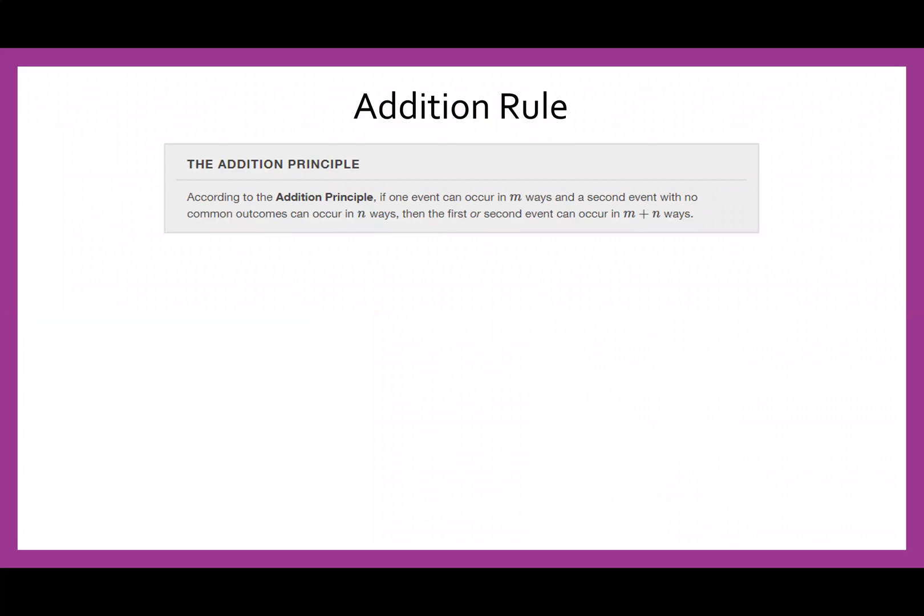Alright, so we're going to start off with the addition rule. According to the addition principle, if one event can occur in m ways and a second event with no common outcome can occur in n ways, then the first or second event can occur in m plus n ways. That sounds weird. Let's look at an example.